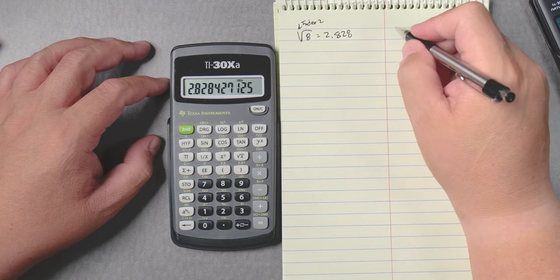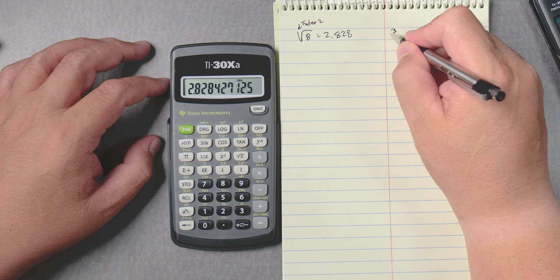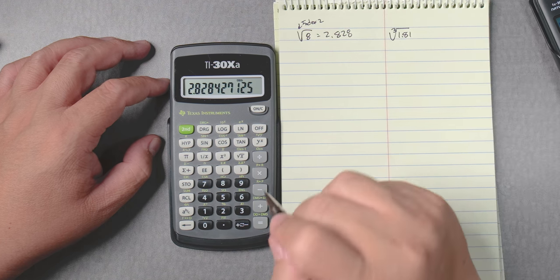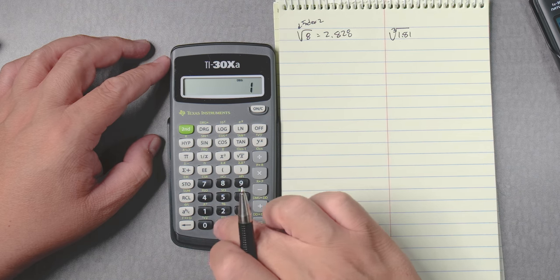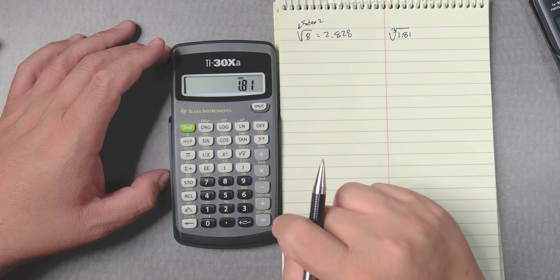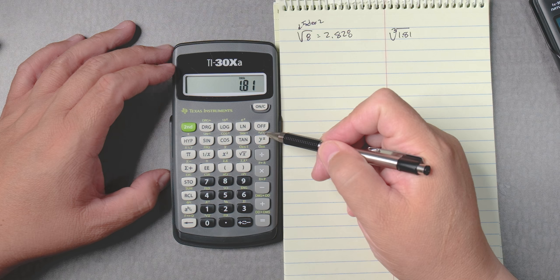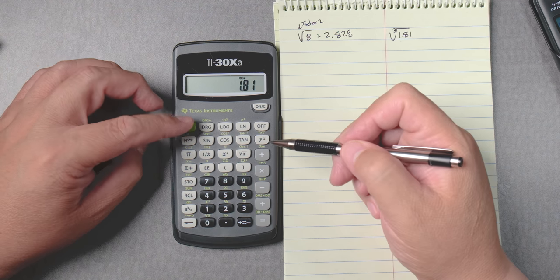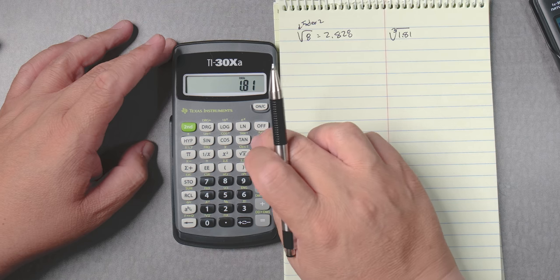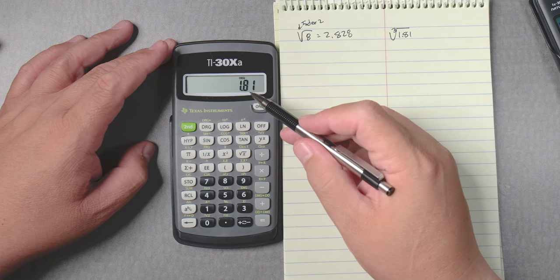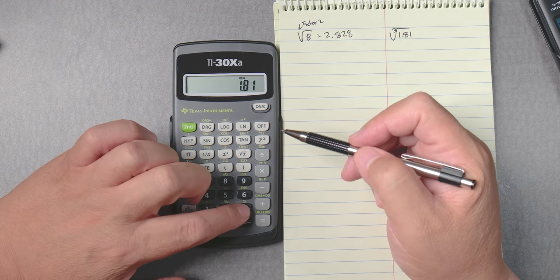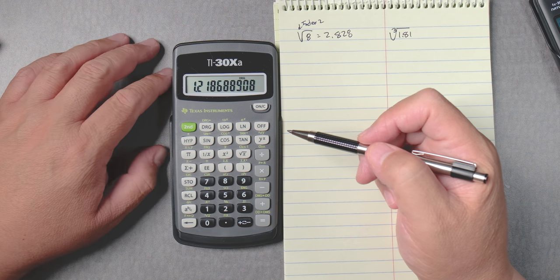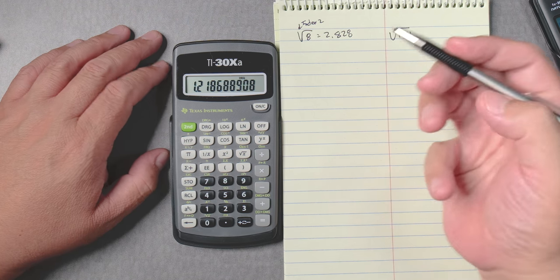Let's try the third root of 1.81. In this calculator we have to put 1.81 first, then in the yellow or green next to the y to the x key you press second y to the x right after you put 1.81, and then to the third root. In this case the answer is 1.218.